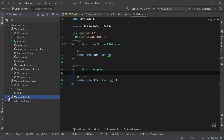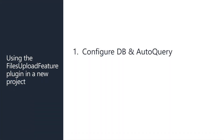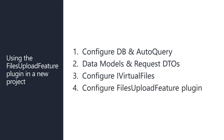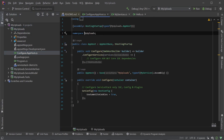The main two projects we'll be updating to use the file upload feature plugin are the app host project for configuration and the service model project to declare our database model and AutoQuery DTOs. To get all the functionality we want from the file upload feature plugin we need to do four main steps: configure a database connection with AutoQuery support, a database model class and AutoQuery request DTO for a create request, configure a virtual files provider, and finally configure our file uploads feature plugin itself. Initially we will just use a local file system to store our files but we will also walk through how to set up AWS S3 and Azure Blob Storage as well.